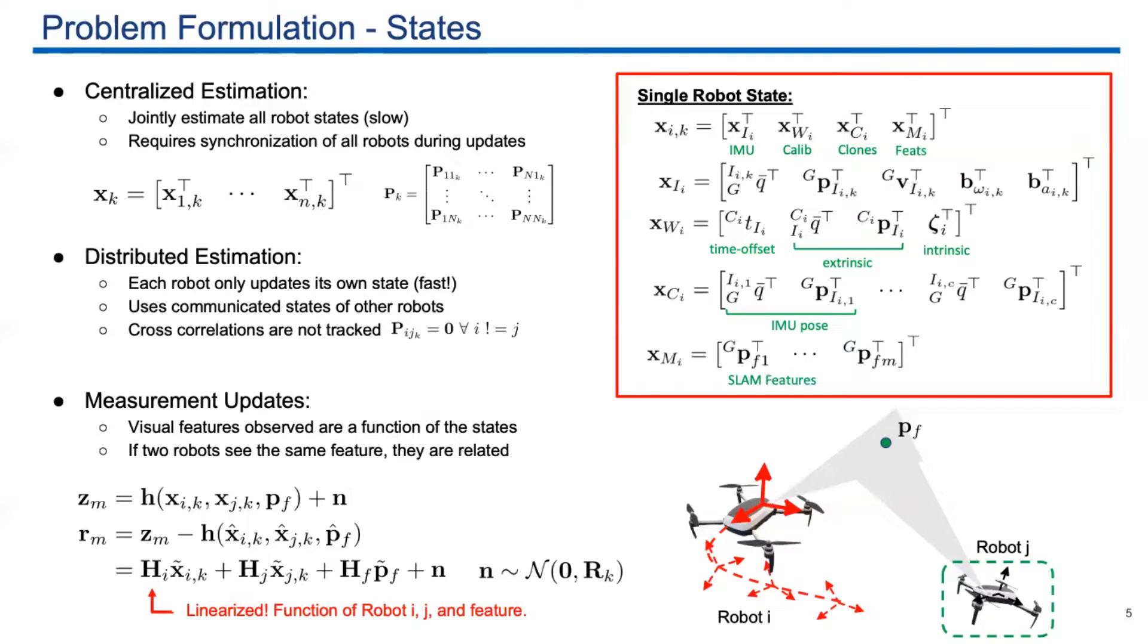We achieve the distributed setting by ignoring the cross covariance between robots. For the common feature, the measurement is a function of the two robots' state and the feature's position. After linearization, we gain this system. We will use this to improve the accuracy.